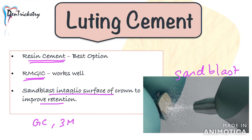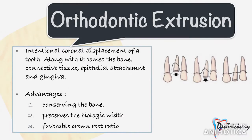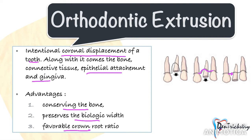The last option is orthodontic extrusion of teeth, or forced eruption. This involves intentional coronal displacement of the tooth, along with which comes the bone, connective tissue, epithelial attachment, and the gingiva. This technique helps in conserving bone, preserves the biologic width, and results in a more favorable crown-to-root ratio. Despite these advantages, the only reason it remains unpopular is because it requires at least 6 to 12 weeks before you can proceed with the final crown.